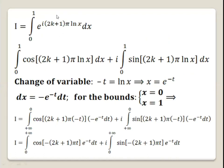Now, using Euler's formula, we know that e to the power i phi equals cosine phi plus i sine phi. So instead of the exponential term, we write cosine of (2k+1) pi ln x plus i sine of (2k+1) pi ln x.